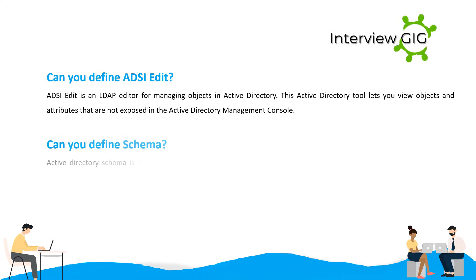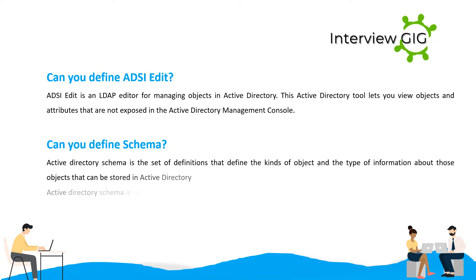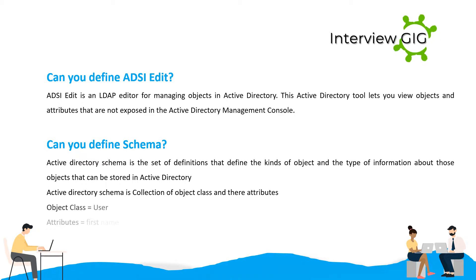Can you define schema? Active Directory schema is the set of definitions that define the kinds of objects and the type of information about those objects that can be stored in Active Directory. Active Directory schema is a collection of object classes and their attributes. For example, object class equals user, and attributes include first name, last name, email, and others.